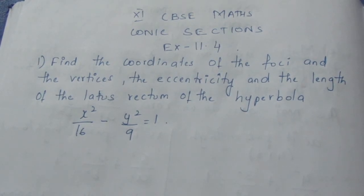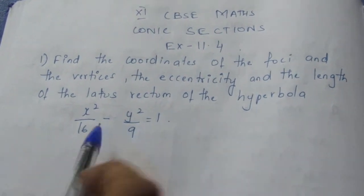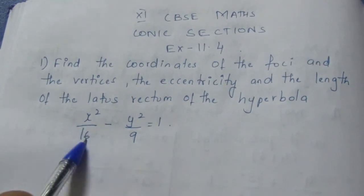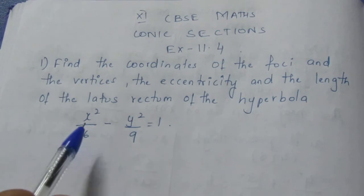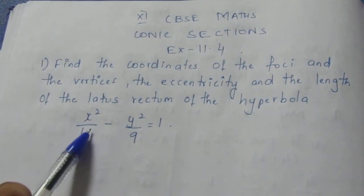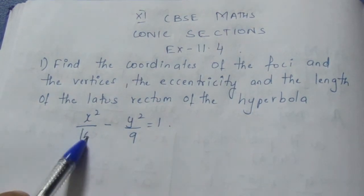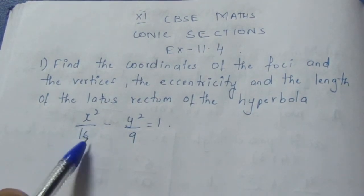Here they have given the hyperbola. If you observe the equation, the x² denominator is greater than the y² denominator, meaning the x-axis. If it were an ellipse, we would say that the major axis is on the x-axis.